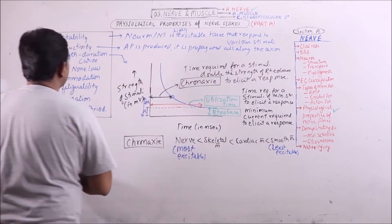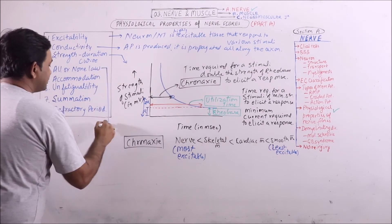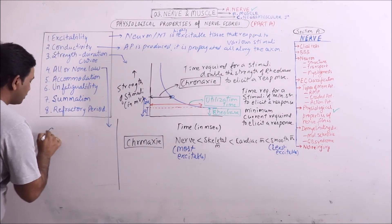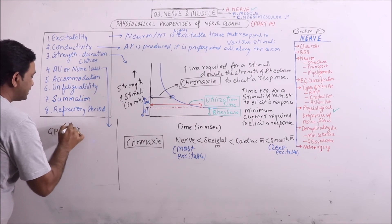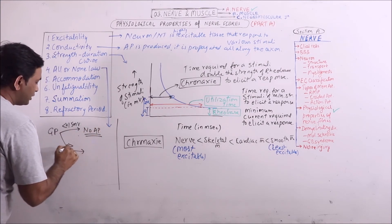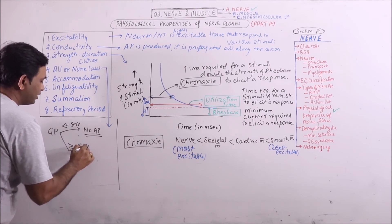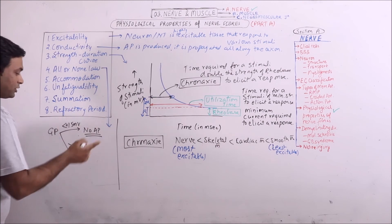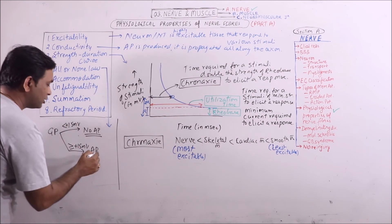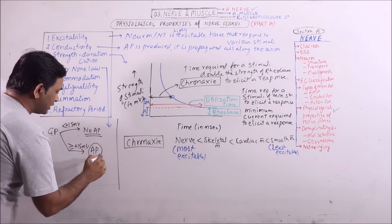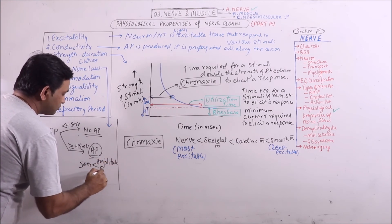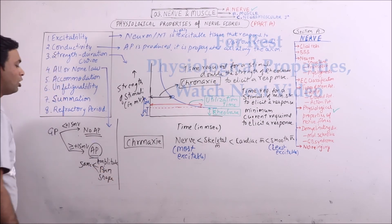Next is all or none law. If the graded potential is less than +15 millivolts, no action potential will be produced. If it is greater than or equal to +15 millivolts — that is, the stimulus is of threshold or supra-threshold value — then an action potential will be produced. All action potentials, whether from threshold or supra-threshold stimuli of any strength, will be of the same amplitude, form, and shape. This is the all or none law.